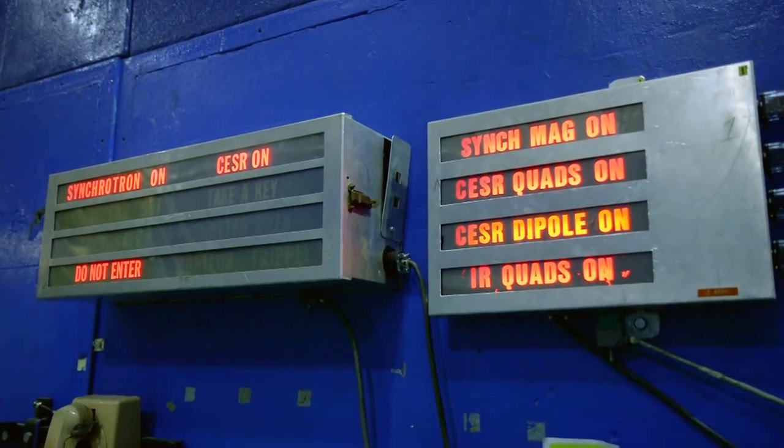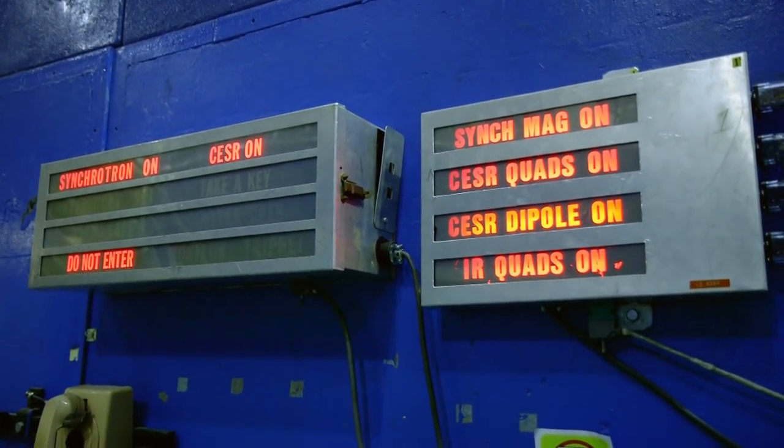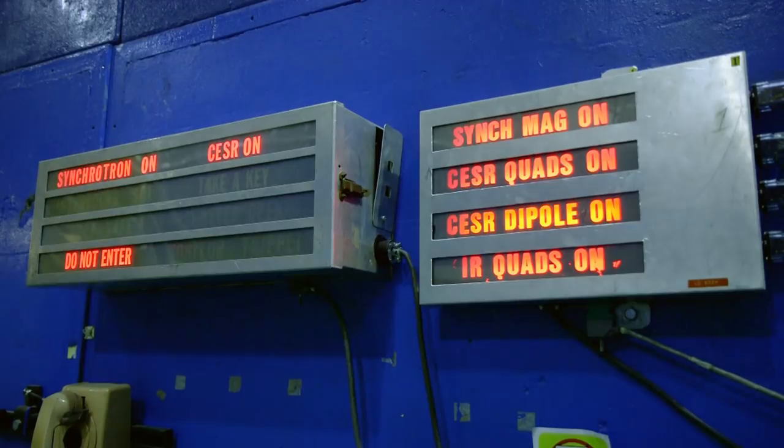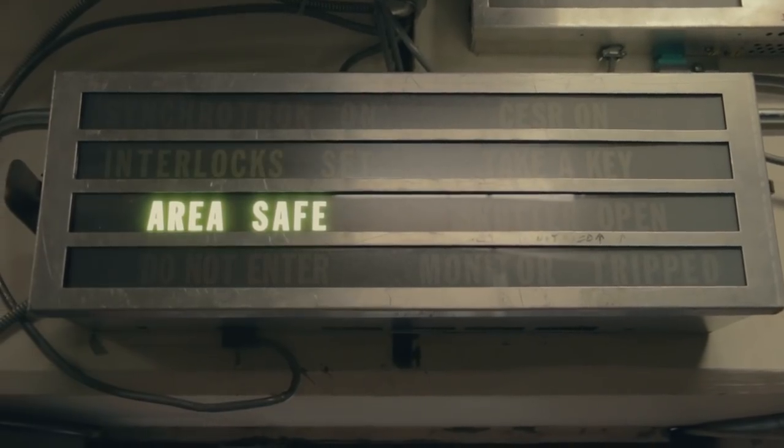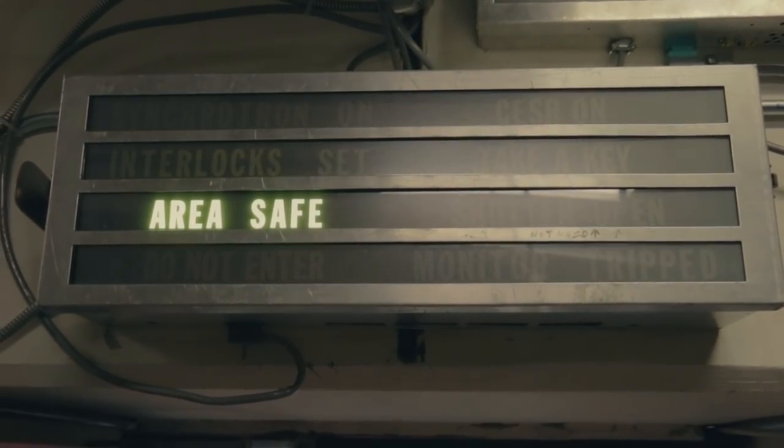Let's begin the tour. But first, particle accelerators, when operating, produce high levels of radiation. Don't worry. The accelerator is now shut off for routine maintenance and tours. Just like your microwave at home, when the accelerator is turned off, the radiation is turned off.